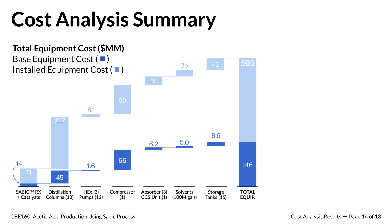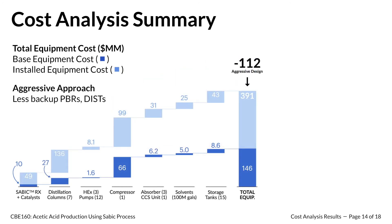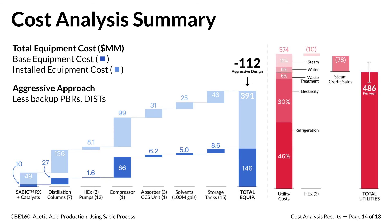Here is a summary of our cost analysis shown in the waterfall diagram. As mentioned, we took a very conservative pricing approach. However, if we take a more aggressive approach by reducing the number of backup reactors and distillation columns, we can reduce our total equipment costs by $112 million. Here is also a drawn-to-scale summary of our utilities, labor, and raw materials costs.